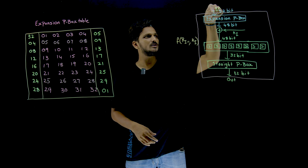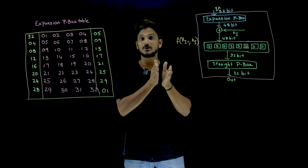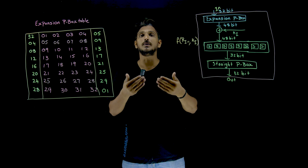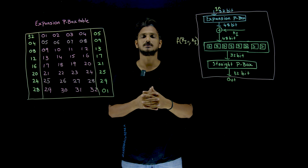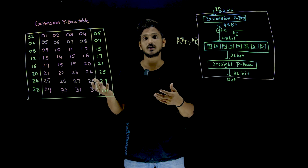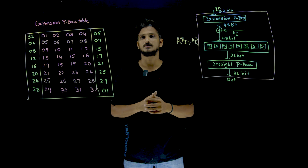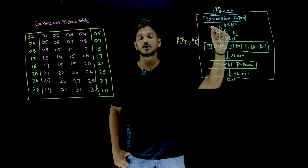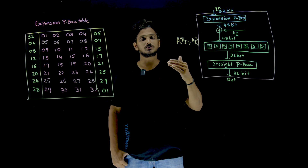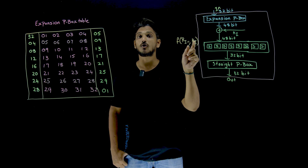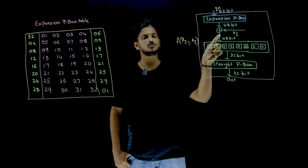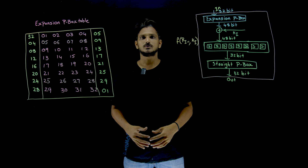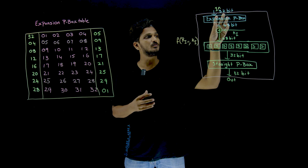Now, the input is 32 bits — the right-hand side 32 bits from our previous class. These 32 bits are converted to 48 bits, meaning we need to expand the number of bits. In order to expand that, as we discussed in our previous classes, we use an expansion P-box. So 32 bits are converted to 48 bits. Why? Because the key is of length 48 bits. In order to do the XOR operation, we need to convert this 32 bits to 48 bits.